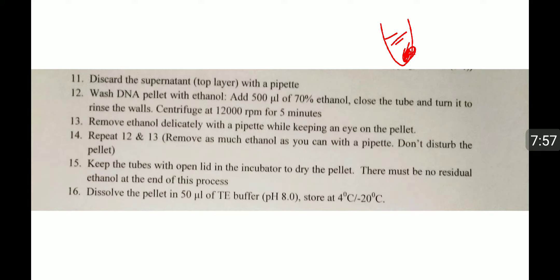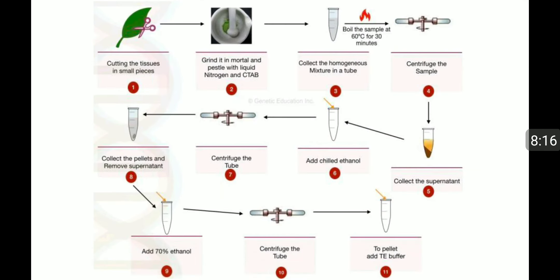Remove as much ethanol as you can with a pipette. Don't disturb the pellet. Keep the tubes with open lid in the incubator to dry the pellet. There must be no residual ethanol at the end of this process. Dissolve the pellet in 50 microliters of TE buffer and store at 4 degrees Celsius or minus 20 degrees Celsius.